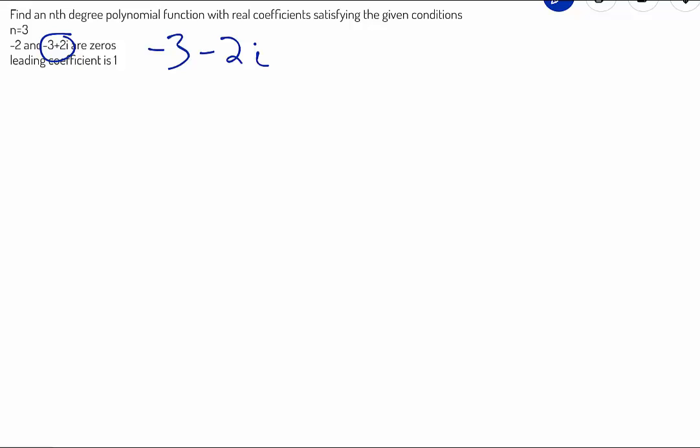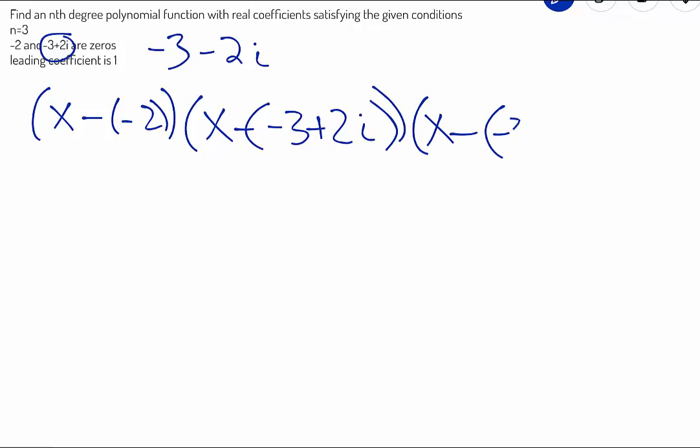The next thing that we're going to do is actually form the factors for this polynomial function. One of our factors is -2, so the way that we do that is we're going to do x minus the -2, x minus the -3+2i, and then the x minus the -3-2i. And those represent the three factors for our function.